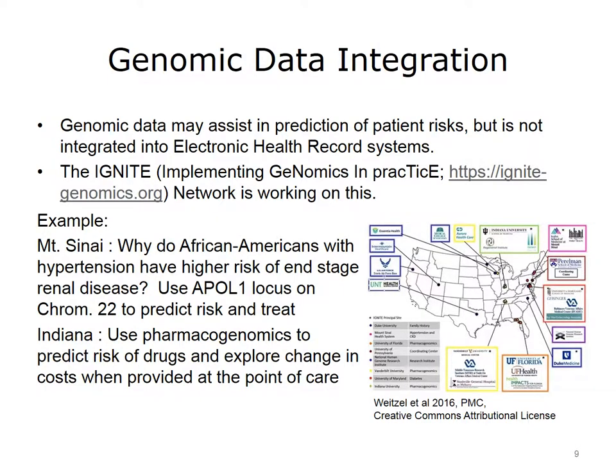Another kind of data that is increasingly important, but is not integrated, is genomic data. We have rapidly increased our ability to process genomic information, but we can't exchange it easily, and it's not integrated into most analytic or healthcare systems. The Implementing Genomics in Practice (IGNITE) network was funded by the National Institutes of Health to improve the integration of this data. Mount Sinai is looking at why African Americans with hypertension have more kidney failure, finding that particular alleles from the APOL1 locus vary by race and may help predict risk. Indiana is using pharmacogenomics to help people pick the right drugs and doses to avoid costly complications.